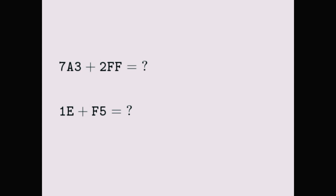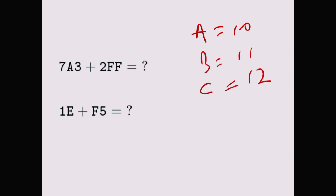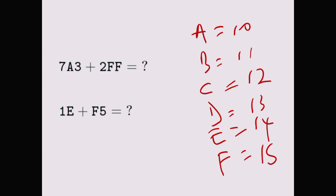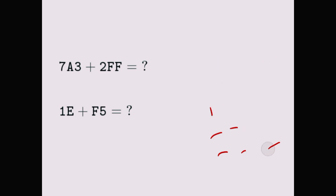Here we have 7A3 plus 2FF. Whenever you see letters like A, B, C, D, E, F, you know we are dealing with base 16. In base 16: A is 10, B is 11, C is 12, D is 13, E is 14, and F is 15, which is the highest number in base 16. Let's add these numbers.